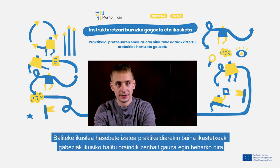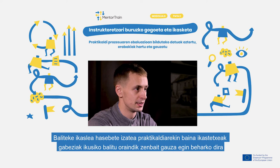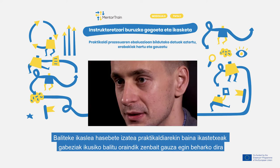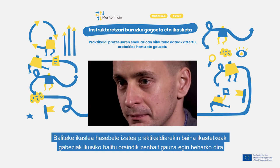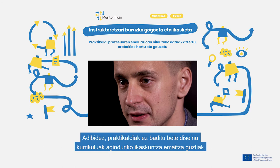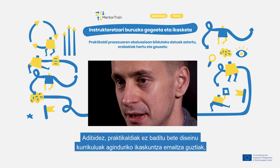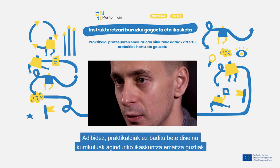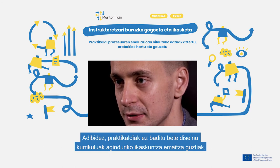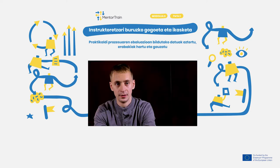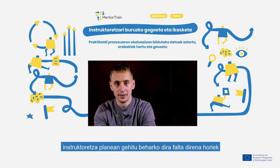A student might be satisfied with the apprenticeship, but if the school sees significant shortcomings, you still need to take action. For example, if the apprenticeship did not fulfill all the learning outcomes stated in the syllabus, you still need to include them in your mentoring plan.